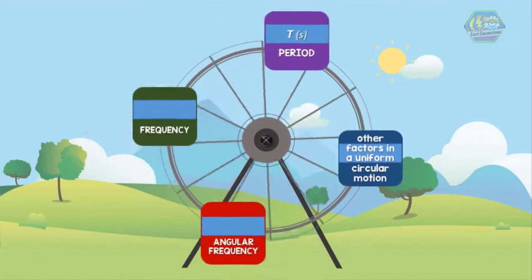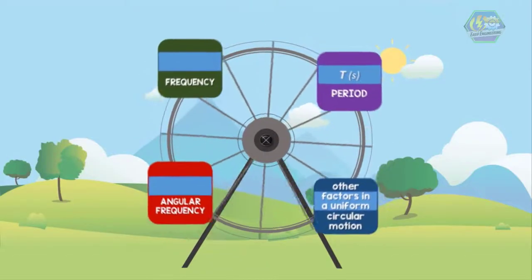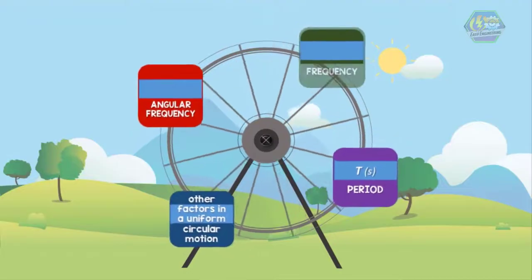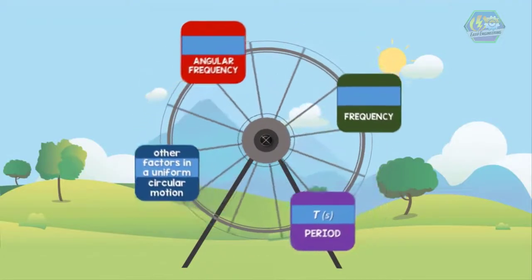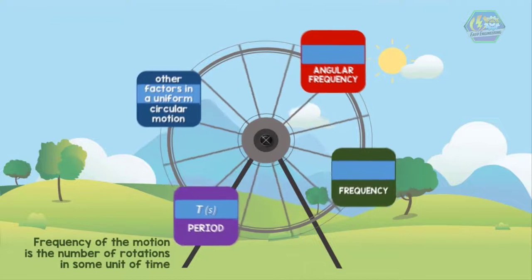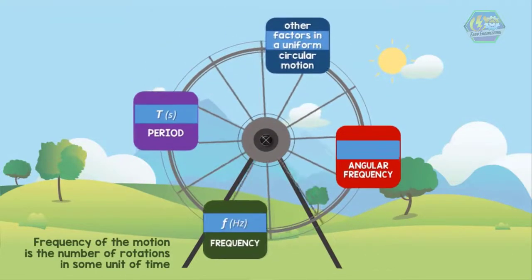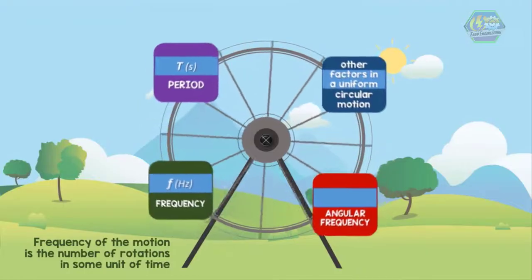But how do we know how many times the object passes through the starting point at a given time? Well, this is where frequency comes into place. Frequency of the motion is the number of rotations in some unit of time. We write as the variable f to represent it and the unit for frequency is Hertz.